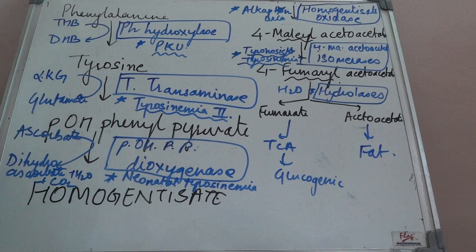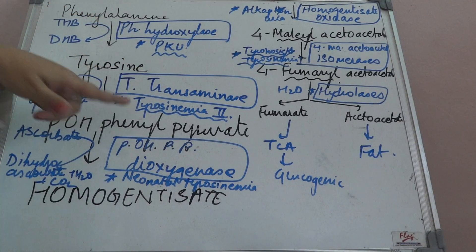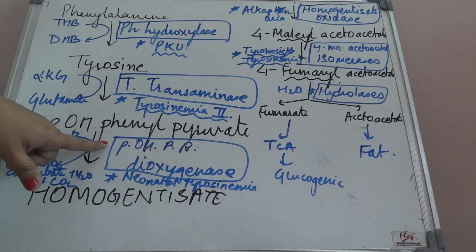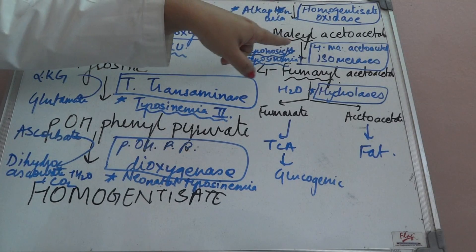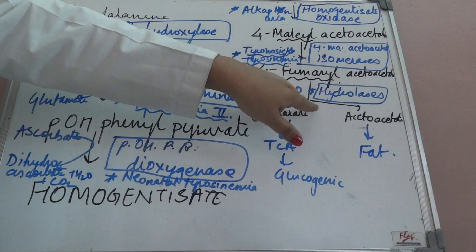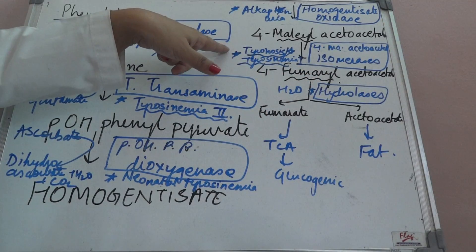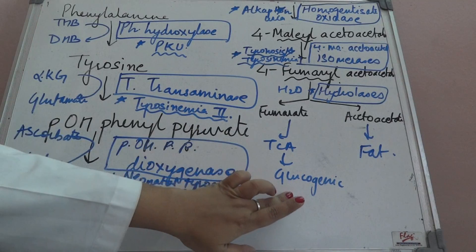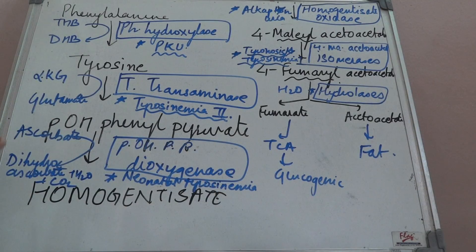Every enzyme in this pathway has an associated disorder. Phenylalanine hydroxylase deficiency causes phenylketonuria. Note that tyrosine transaminase deficiency causes tyrosinemia type 2 — so type 2 comes first in the pathway. Parahydroxyphenylpyruvate dioxygenase deficiency causes neonatal tyrosinemia. Homogentisate oxidase deficiency causes alcaptonuria. 4-maleylacetoacetate isomerase or 4-fumarylacetoacetate hydrolase deficiency causes tyrosinosis or tyrosinemia type 1.